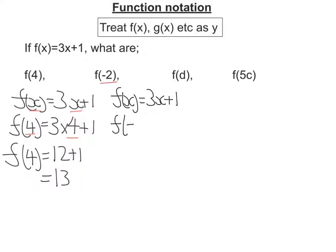So there's an x, replace it and I've got 3 times negative 2 plus 1. So negative 2 times 3 is negative 6, add 1 there. So we've got f of negative 2 is negative 5.